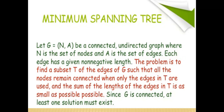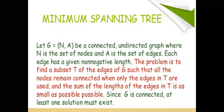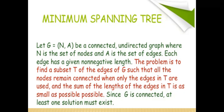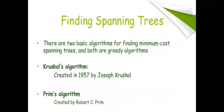Suppose there are N nodes — it has N minus one edges. There are two methods to find the minimum cost spanning tree. Both are greedy methods. The first one is Kruskal's algorithm and the second one is Prim's algorithm.